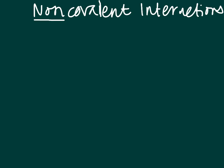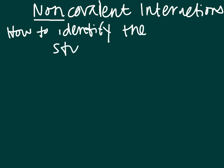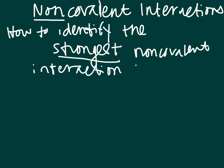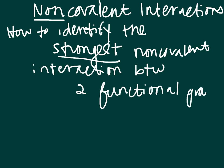We're going to start by going over what the non-covalent interactions are and how to rank them. To do that, we're going to make a chart — basically a how-to guide on how to identify the strongest non-covalent interaction between two functional groups. We will also learn how to draw these in the best orientation and proximity.